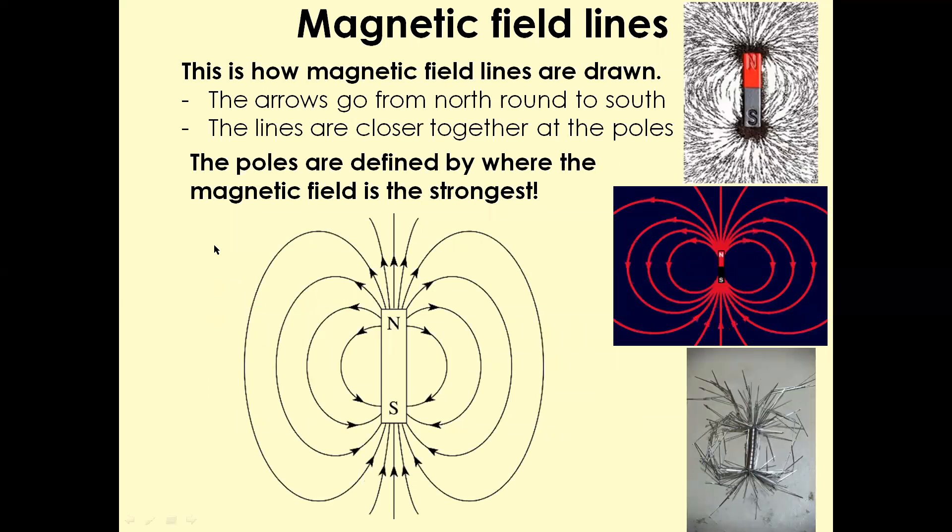There will be an important exam question where they will ask you to draw magnetic field lines around a bar magnet. Two important rules you need to follow. The arrows, they always go from north and they end up in south.